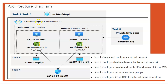The virtual network is az104-04-vnet1. The second task will be to deploy virtual machines into the virtual network — these two boxes inside subnet zero and subnet one, the two blue machines, are virtual machines. We will then configure the private and public IP addresses. This green card is known as a network interface card, which we will see in more detail.